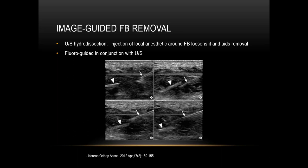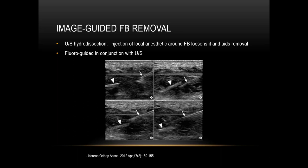Ultrasound hydrodissection is a procedure where local anesthetic is injected around a foreign body to loosen it and help aid its removal. In the images shown, the arrowhead marks the foreign body and the arrow indicates the needle injecting anesthetic both posterior and anterior to the foreign body to loosen it and bring it near the surface. Fluoroscopy can be used in conjunction with ultrasound to help remove foreign bodies.